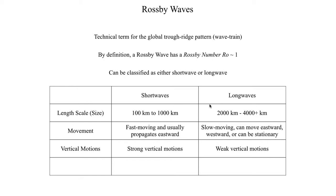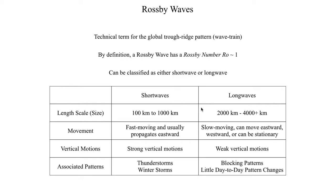Within short waves, the vertical motions tend to be relatively strong, versus in long waves the vertical motions tend to be relatively weak. However, long waves, even though they don't produce a lot of weather themselves, can result in prolonged periods of the same weather pattern. Short waves typically bring a bout of thunderstorms or some sort of precipitation — unsettled weather that's usually done in a couple of days. But in the case of a long wave, sometimes you can get what's referred to as a blocking pattern, which means whatever weather you see today is probably going to be the weather for the next several days or even weeks.